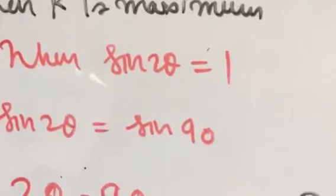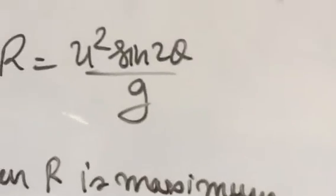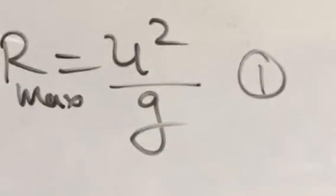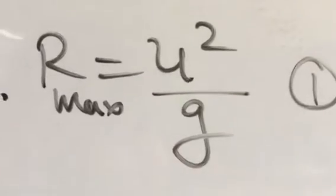Range maximum, when we have sine 2 theta to 1 put, sine 2 theta 1, what has become u square upon g. From equation first, R maximum u square upon g.